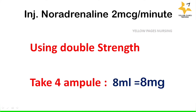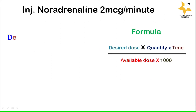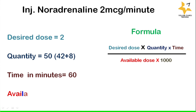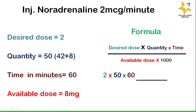For double strength, we take 4 ampoules of noradrenaline containing 8 ml, equaling 8 mg, which is the available dose. Applying the formula: desired dose = 2, quantity = 50 ml (42 ml of normal saline plus 8 ml of noradrenaline), time in minutes = 60, available dose = 8. The answer is 0.75 ml per hour.